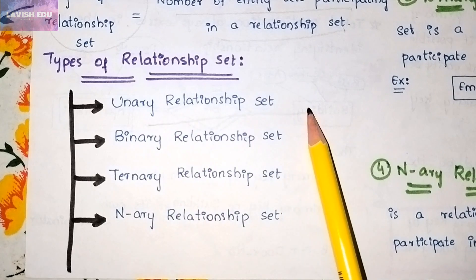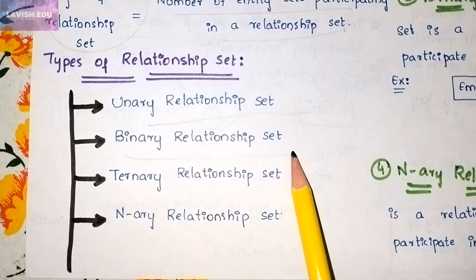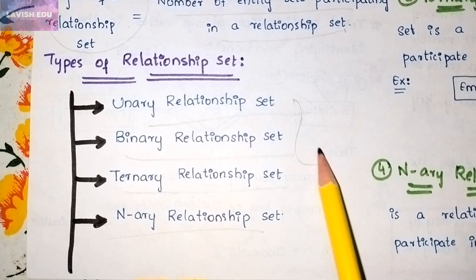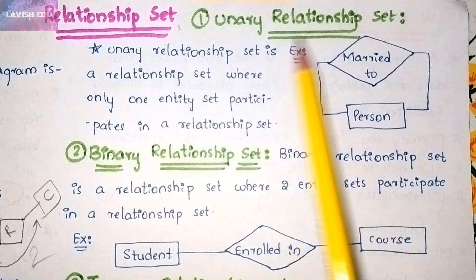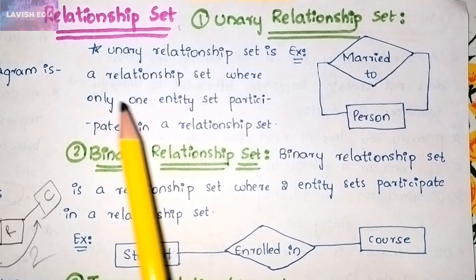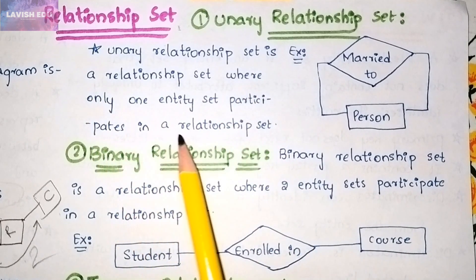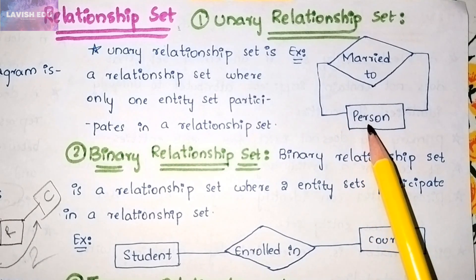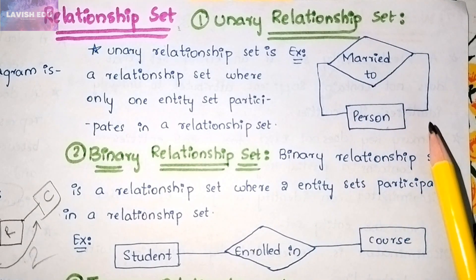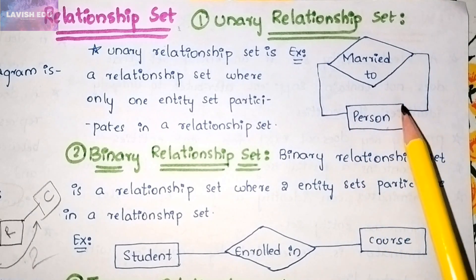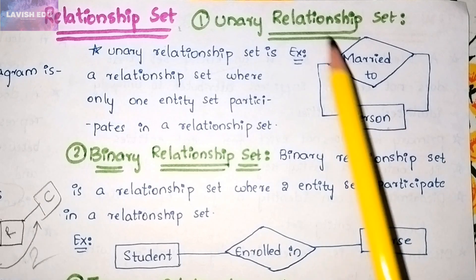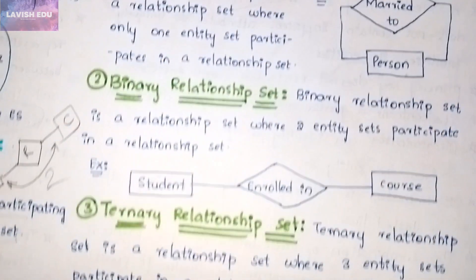There are some types of relationship sets: unary, binary, ternary, and n-ary. A unary relationship set is one where only one entity set participates. For example, a person marries a person — the relationship is formed between the same entity, which is why it is termed a unary relationship set.